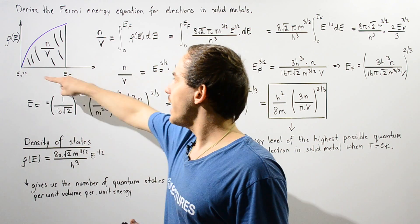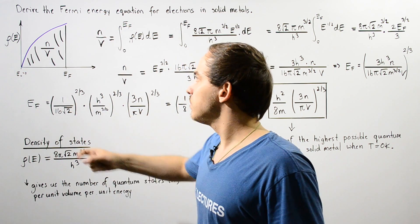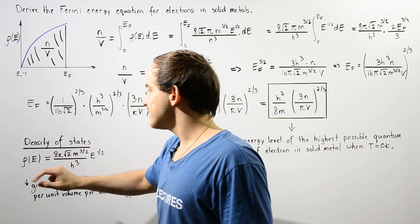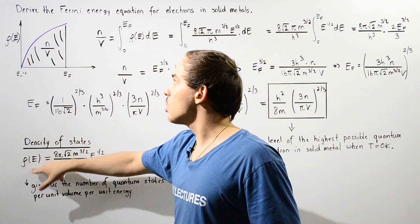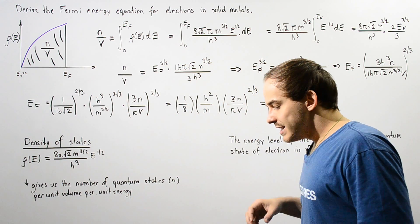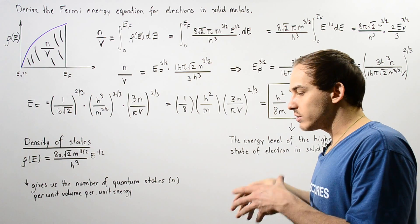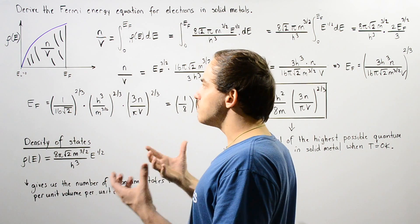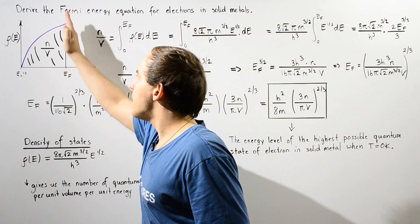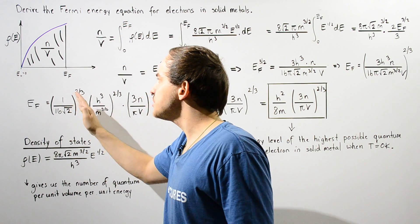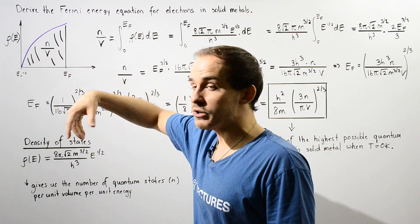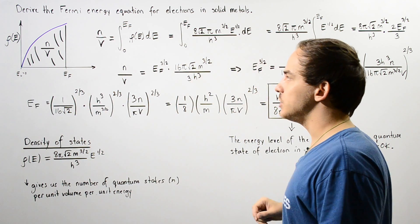If we plot this equation on the xy plane, where the x-axis is the energy of the electron and the y-axis is our density of states function rho of E, we get the following purple curve. If the temperature of our solid metal is brought to absolute zero, the highest possible quantum energy state that our electron will be found in is given by E_F, which corresponds to the Fermi energy level.